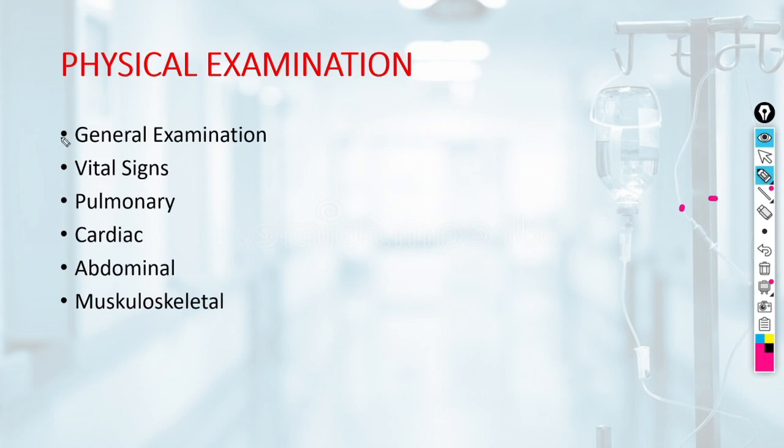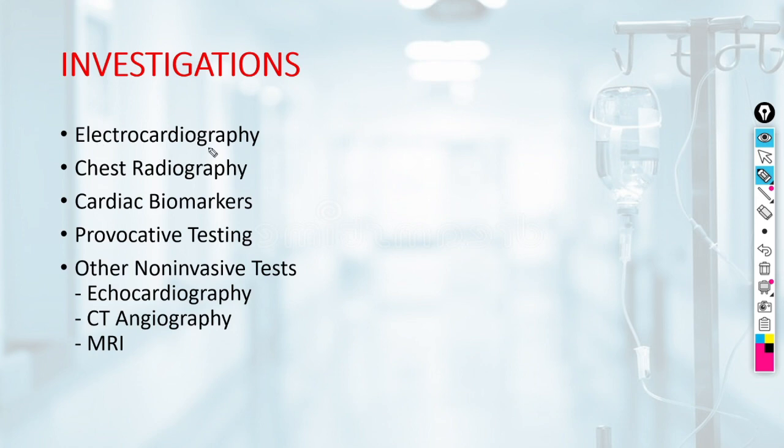In physical examination, we first look at general examination and vital signs, then proceed to systemic examination: pulmonary, cardiac, abdominal, and musculoskeletal. Investigations are done in this order: electrocardiography (ECG), chest radiography, cardiac biomarkers, provocative testing if required, and other non-invasive investigations.